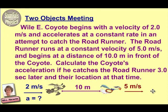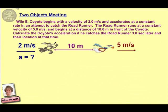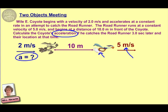So if we look at our diagram here, we see, first of all, that the Road Runner has a head start — here's his location 10 meters ahead. He's also traveling faster, but the coyote is accelerating to catch him. We need to calculate the coyote's acceleration if he catches the Road Runner three seconds later, and we also want to know their location at that time.